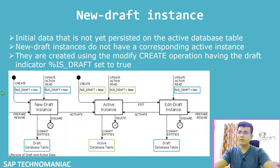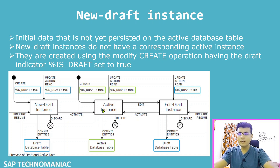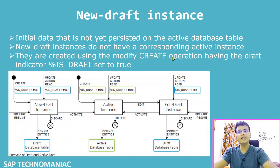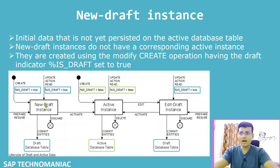When you are happy with the data and save it, the new draft instance is activated and an active instance is created first on the transactional buffer, then saved to the active database table. The active instance can also be created directly — if your business object is not draft-enabled, or even if it is draft-enabled, if you use the EML statement with is_draft equal to false in the modify create operation, it will directly create the active instance and save it to the database table without creating draft data.